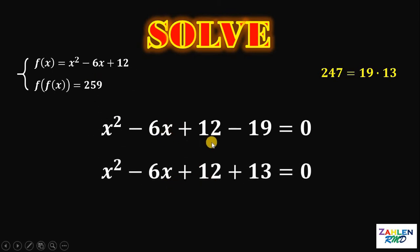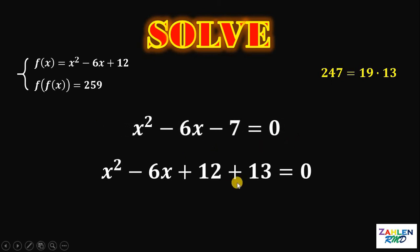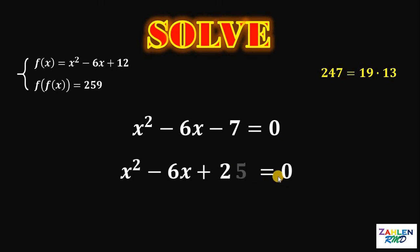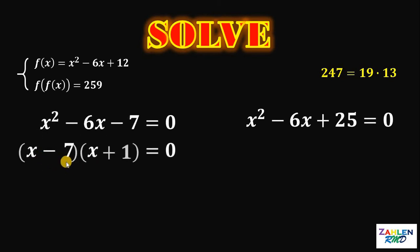Let's simplify the first equation. 12 minus 19 will give us negative 7. And on the second equation, 12 plus 13 will give us 25. Let's separate these two equations and solve for the value of x. x squared minus 6x minus 7 is factorable.